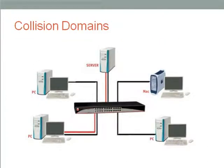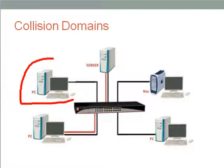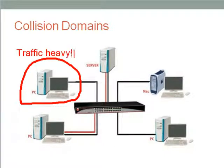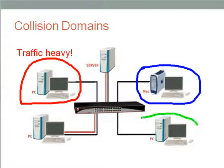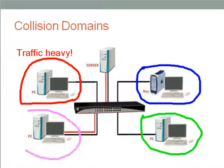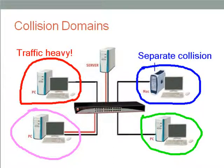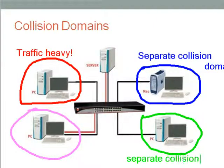Looking at the following diagram, we have a switch connected to five separate networks. Assuming the network highlighted in red has a lot of traffic, that network traffic is isolated within the red network. The networks in blue and green are not affected because they are in separate collision domains. As a result, the separate networks will have faster speeds compared to the heavy traffic on the red network.